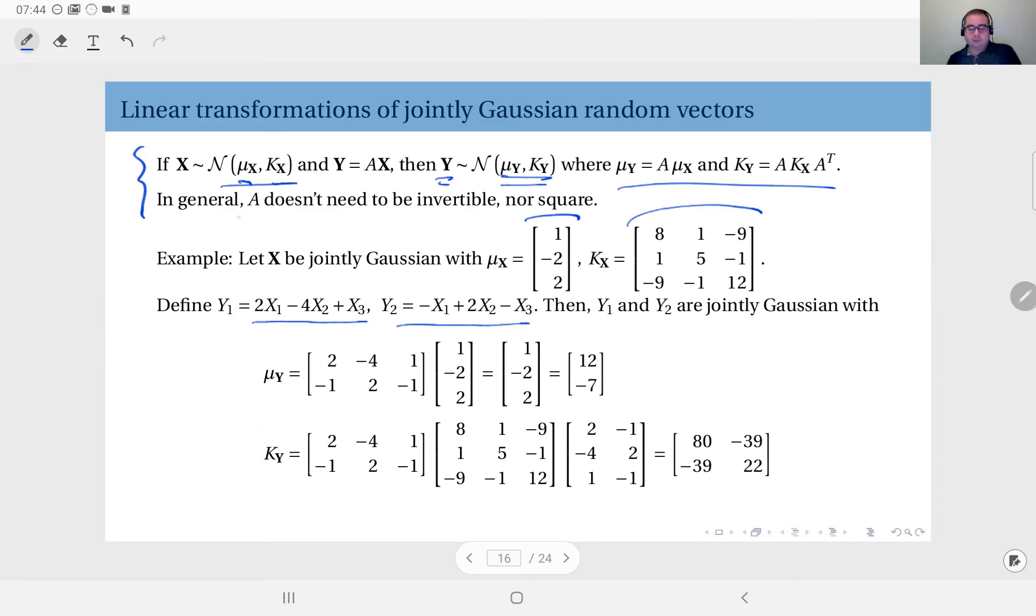They have these relationships with mean of X and covariance matrix of X. As I said, matrix A doesn't need to be invertible, doesn't need to be square matrix. So here's an example to precisely that. You see Y1 and Y2 make the random vector of Y, so random vector Y is dimension two. The original distribution X is dimension three, so my transformation matrix is two by three.